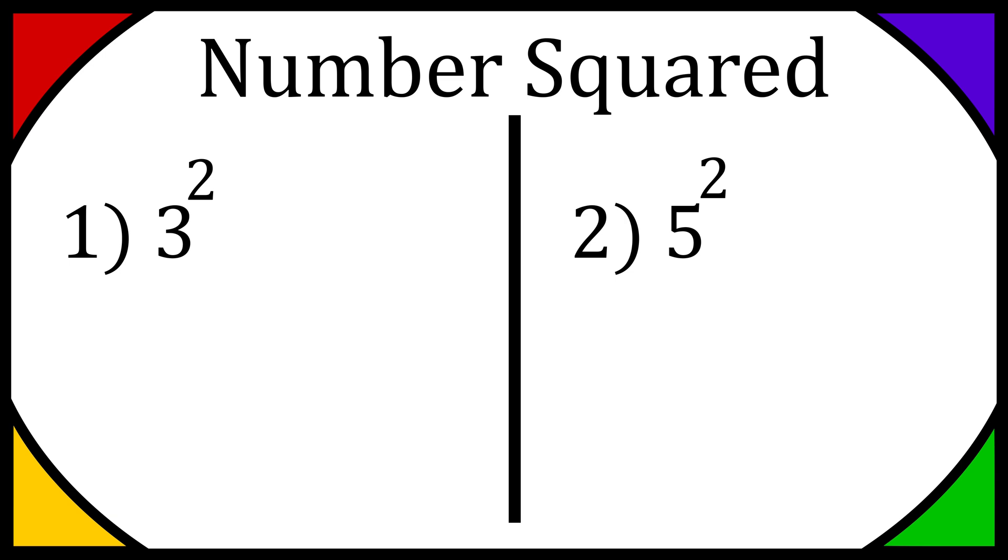So question number one, we have three squared. Now that little two above the top right-hand side of the three means that the number is squared. When it's squared, it just means it's that number times itself. So in this case, that's going to be three times three, and that's going to be equal to nine.